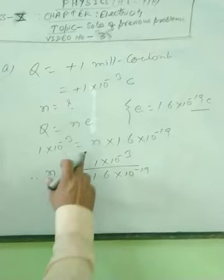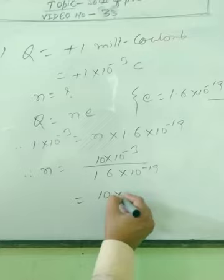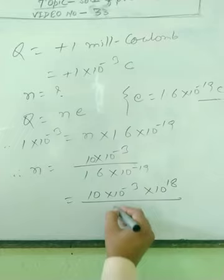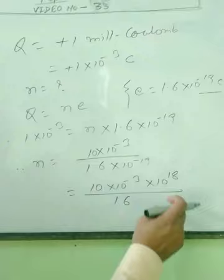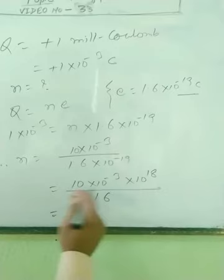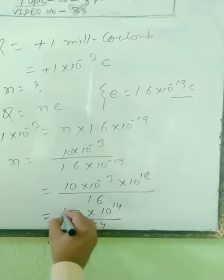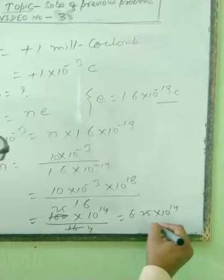Such types of problems I have already told you: make the numerator more than the denominator. Remove this decimal and put here 10, then 10 into 10 to the power minus 3 into 10 to the power 19 by 16. Replace one zero from it, so it will be 17, and 17 minus 3 means 14. 10 by 16 is 6.25 into 10 to the power 14 electrons.